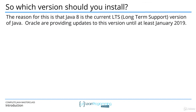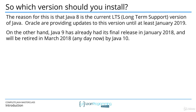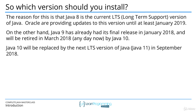Java 8 is the current LTS version — LTS stands for Long Term Support — meaning Oracle are providing updates to this version until at least January 2019. Java 9, on the other hand, had its final release in January 2018 and will be retired in March 2018, replaced by Java 10. Java 10 will itself then be replaced by the next long term support version, Java 11, coming out in September 2018.